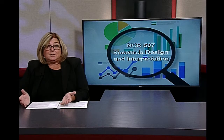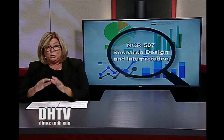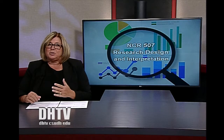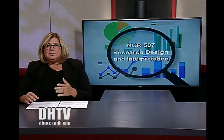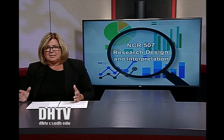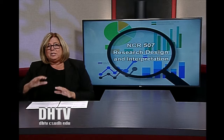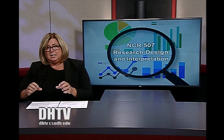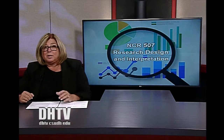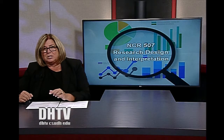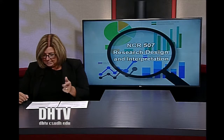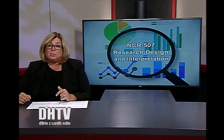As you function as a participant observer, you need to record the data you're seeing. One very common way is to construct field notes — specific ways to jot down, identify, ultimately categorize, and make sense of the experiences you have as a researcher. There are smarter ways to organize field notes, which our next clip will address.